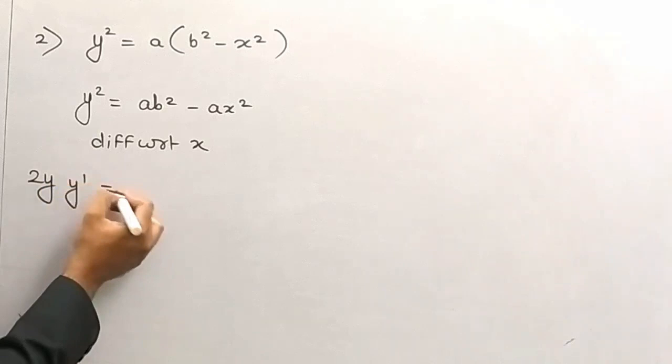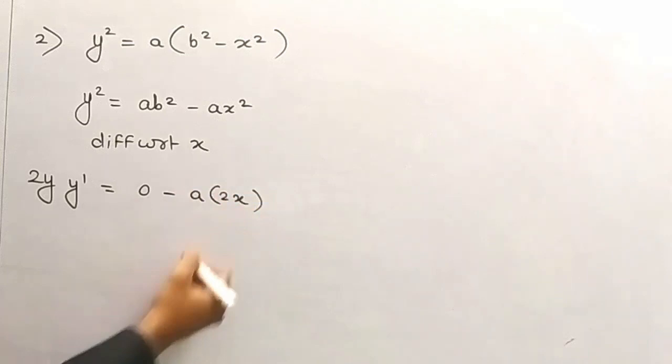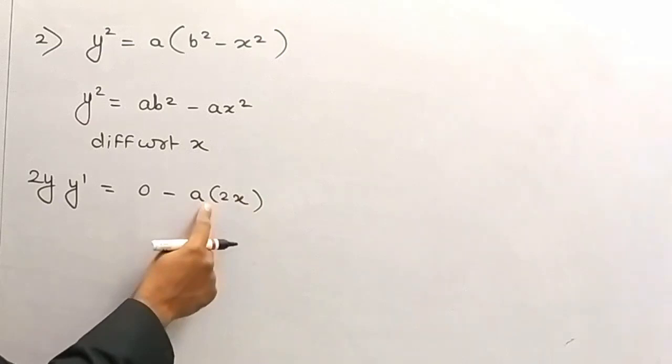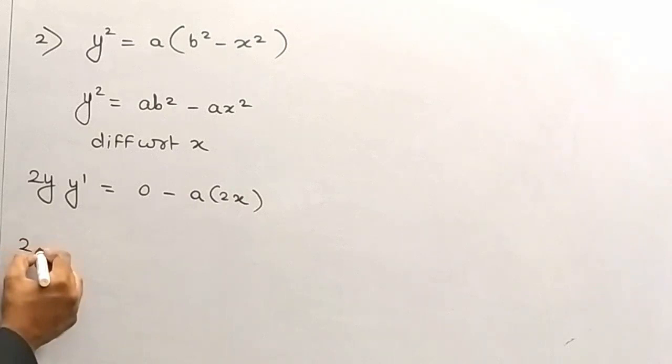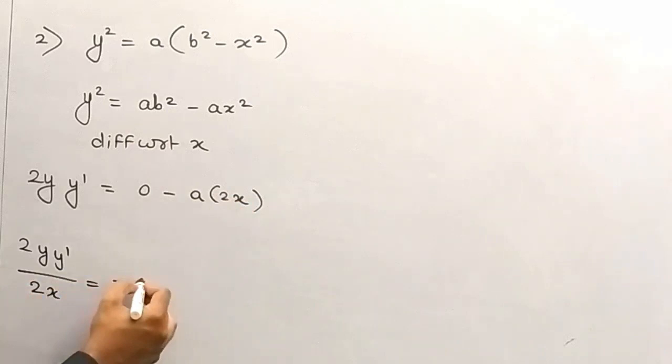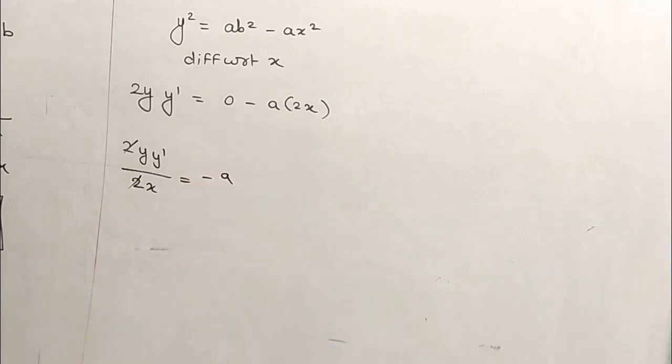Yeh mar gaya — derivative 0. x² ka derivative 2x. Fir se derivative lena padega. The reason is, we wanted to kill the constant 2a. Idea number one: take x to the other side. Toh hum kya karenge? 2y·y'. Maine kya karta hoon — 2x is taraf le jaata hoon, aur minus a idhar rehne deta hoon. 2-2 cut. Now if you take the derivative, I would be able to kill the minus a.